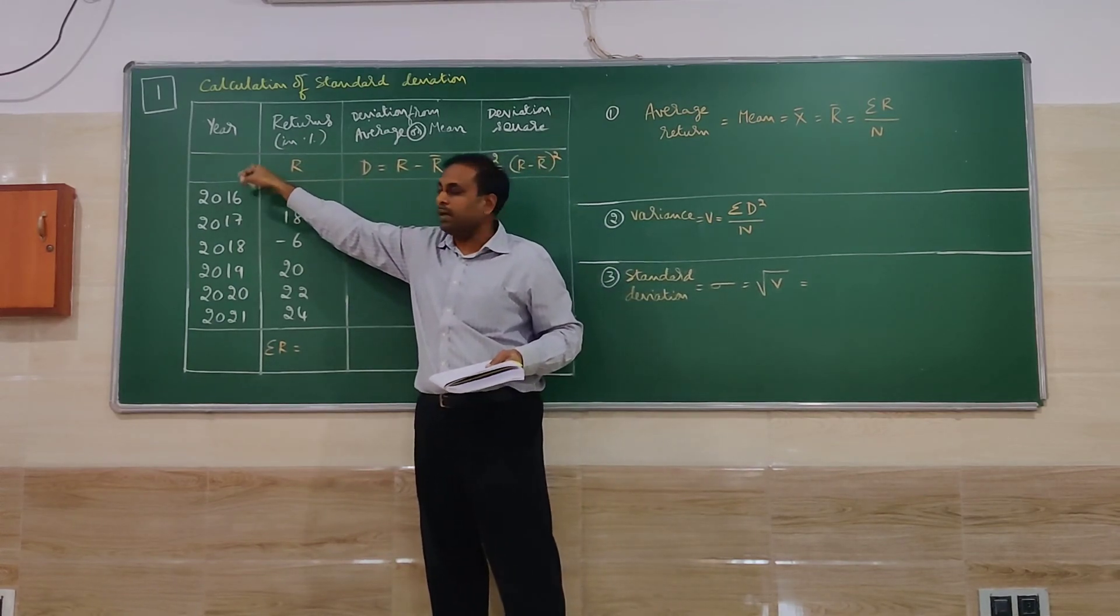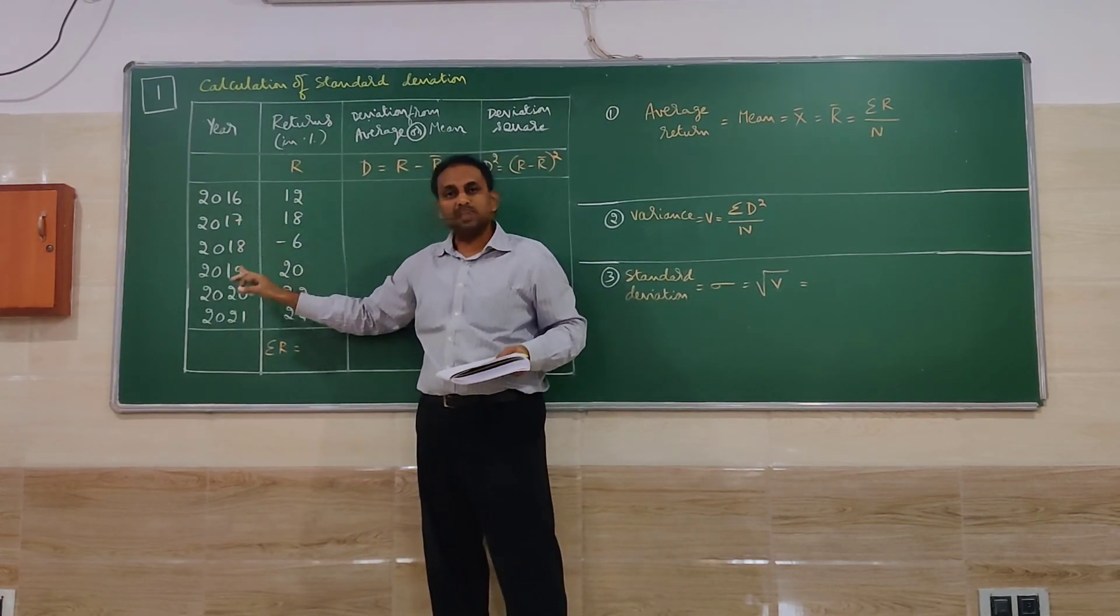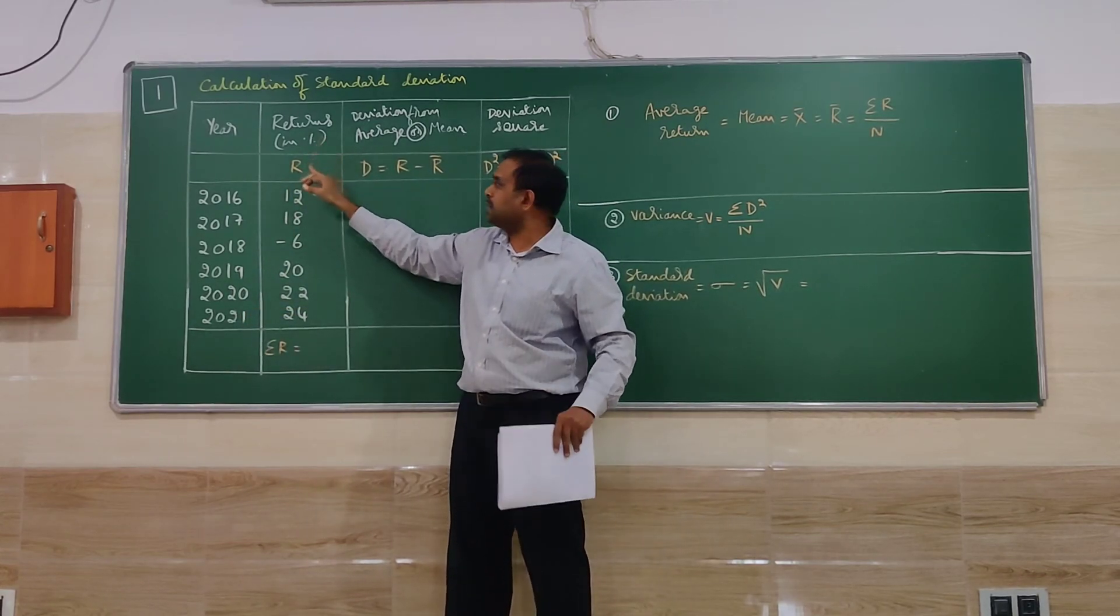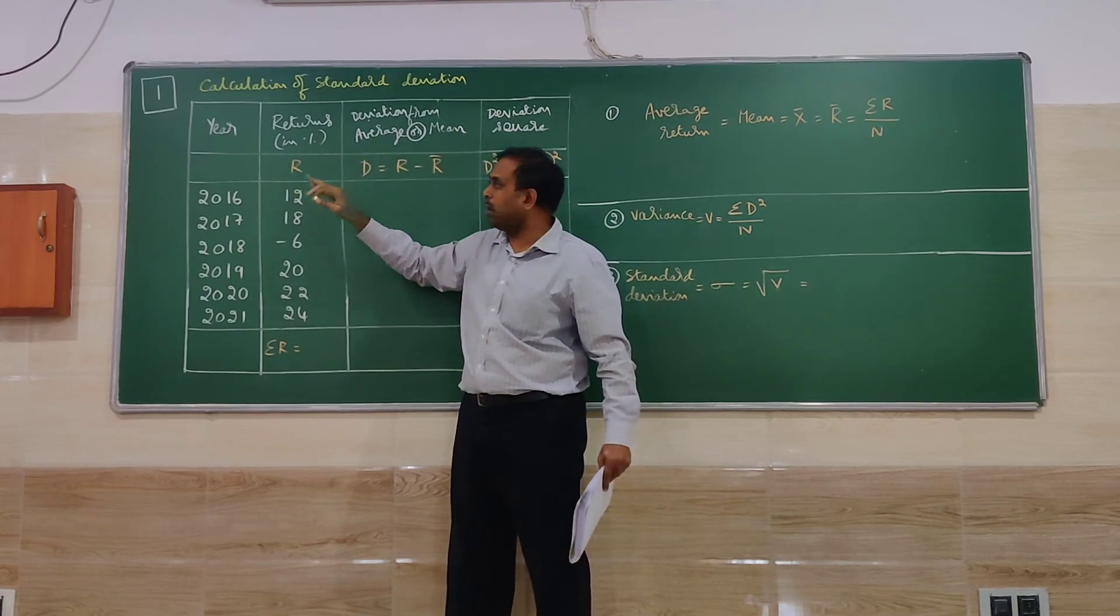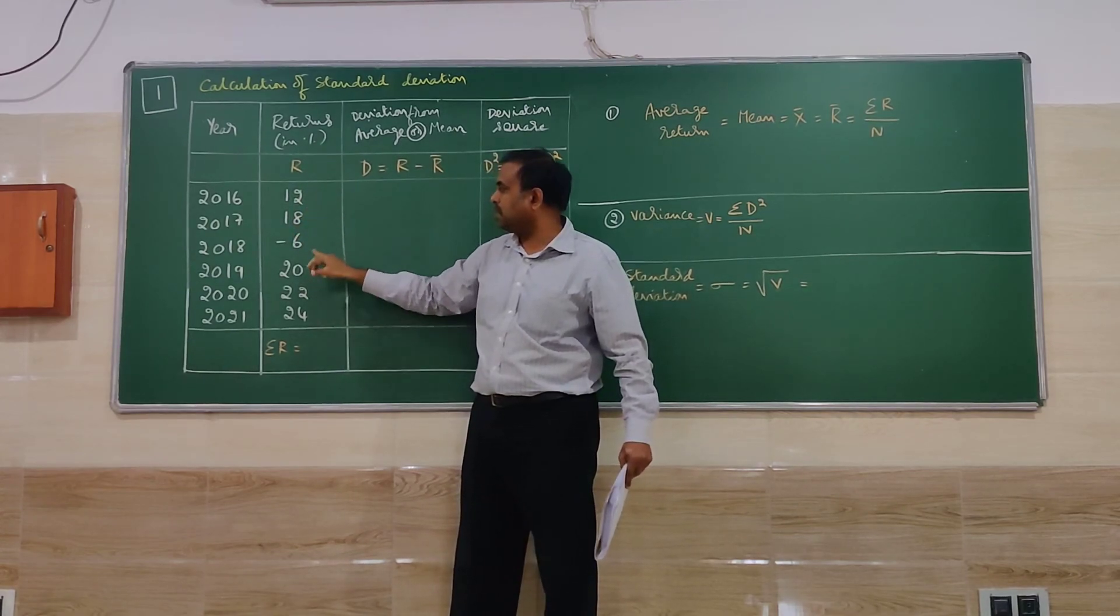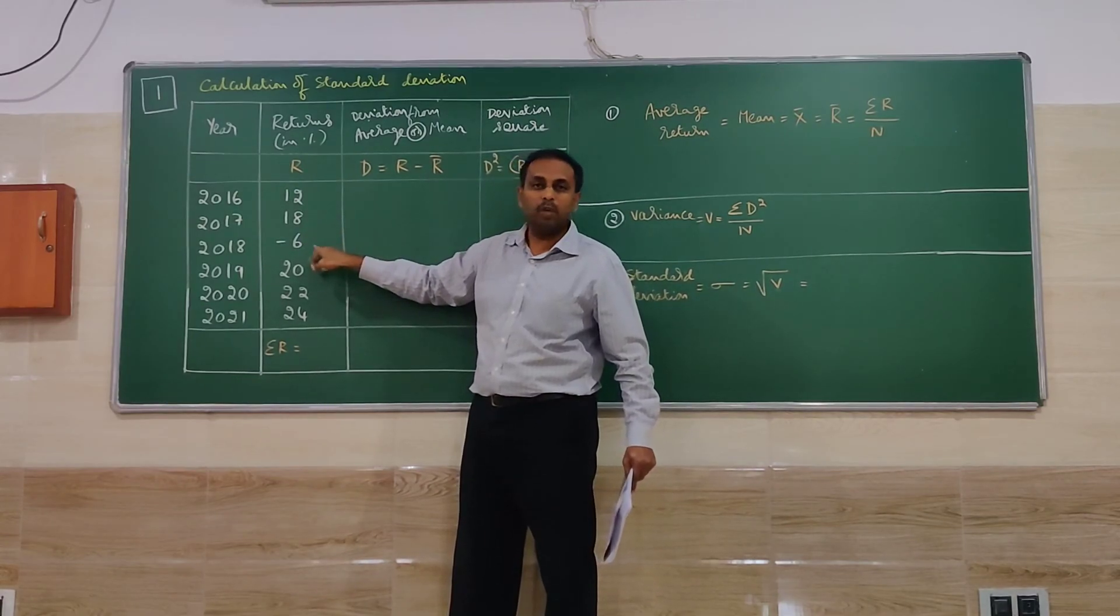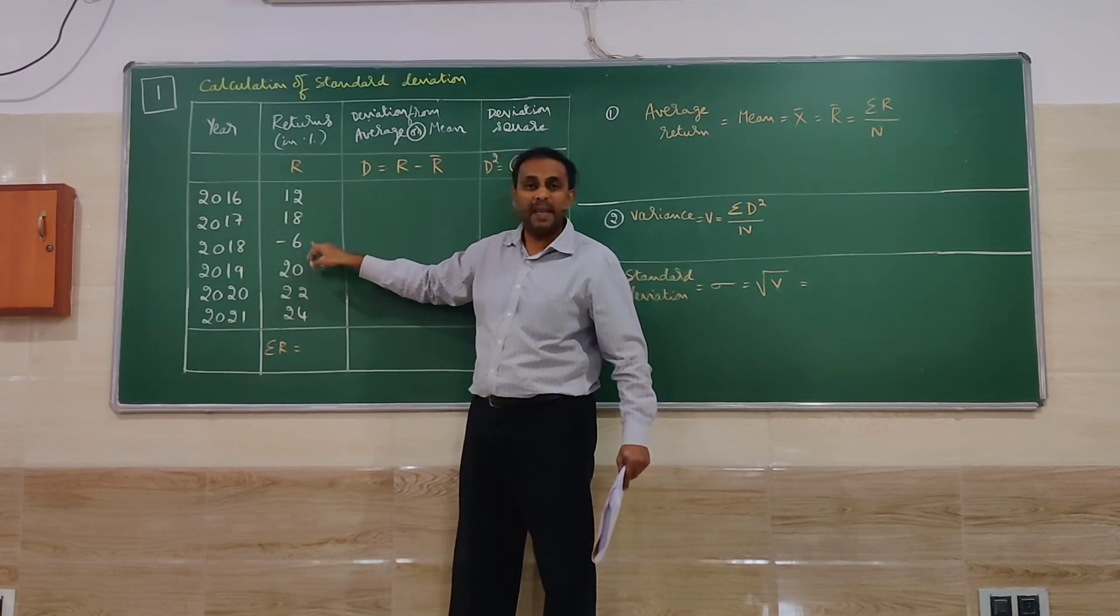I have written here year in the first column 2016 to 2021. The returns is given in percentage. Return is denoted as R and we have returns here. 5 years we have plus returns and 2018 only one year which is in negative.